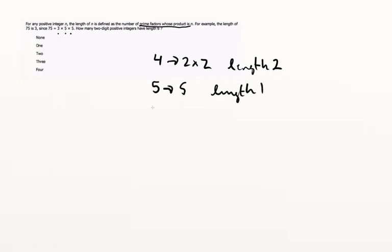For example, the length of 75 is 3, since 75 is 3 times 5 times 5. So what we're looking for is all of the prime factors — that's 1, 2, 3 prime factors, therefore we have length 3. So if we take 4, the factorization is 2 times 2, so that is length 2. The factorization of 5 is just 5, so that's length 1. The factorization of 6 is 2 times 3, so that's length 2.